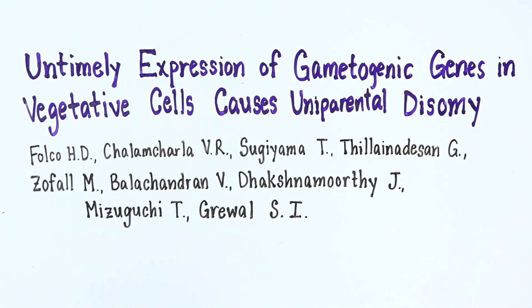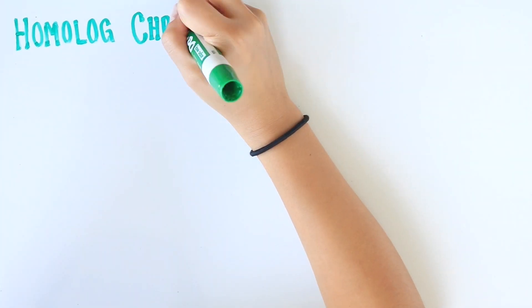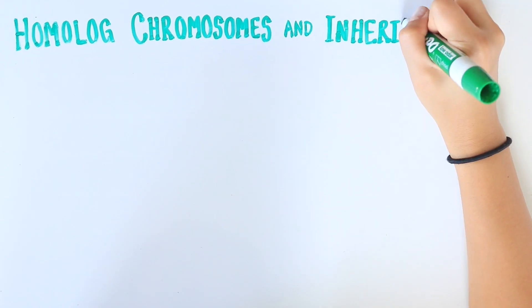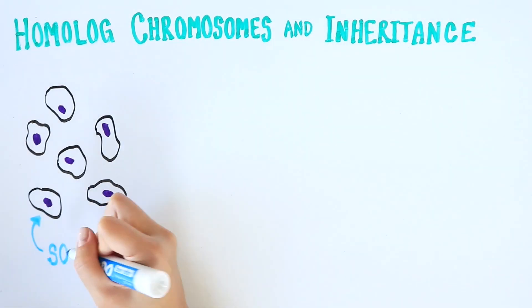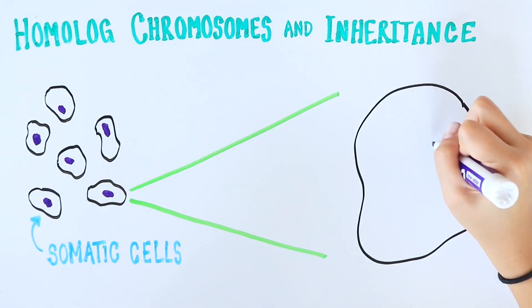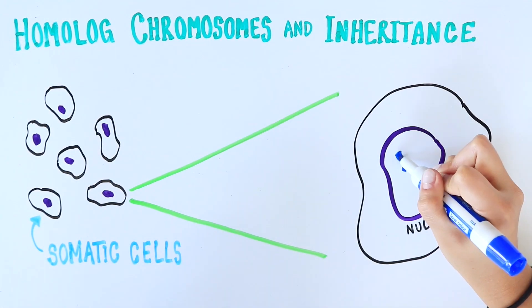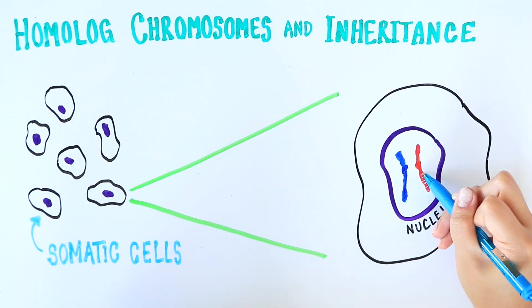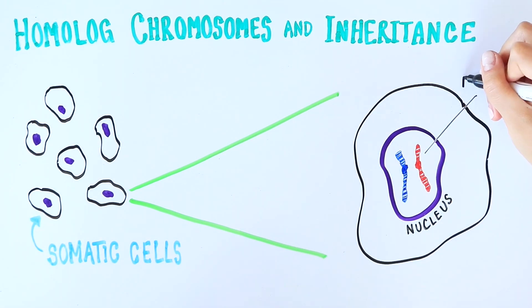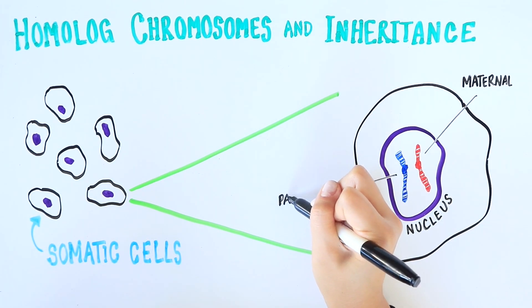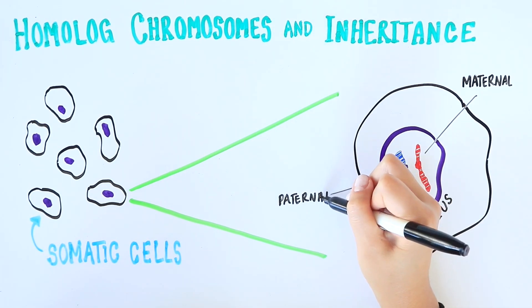Untimely expression of gametogenic genes in vegetative cells causes uniparental disomy. Most of the cells in our bodies, called somatic cells, contain two sets of chromosomes — one maternal set inherited from mom and one paternal set inherited from dad.